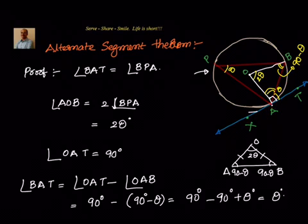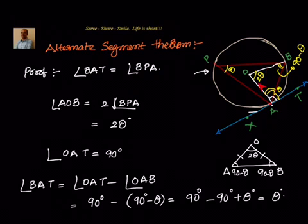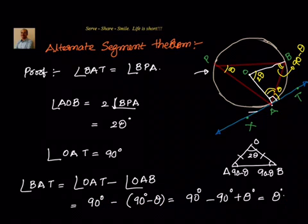The angle between the tangent and the chord, angle BAT, equals theta. We proved this by: knowing the angle at center is 2 theta, recognizing triangle OAB is isosceles with base angles 90 minus theta, and using the fact that angle OAT is 90 degrees. So 90 minus (90 minus theta) equals theta — that is the Alternate Segment Theorem.